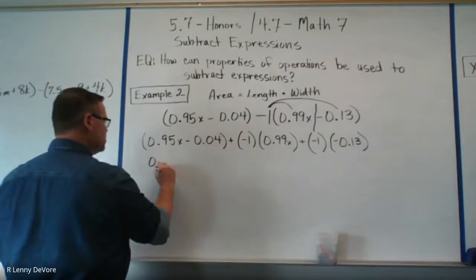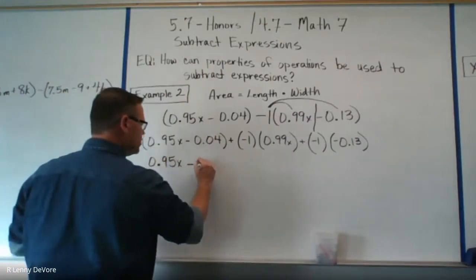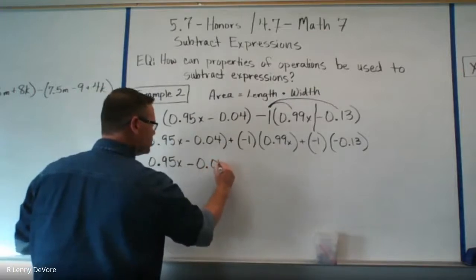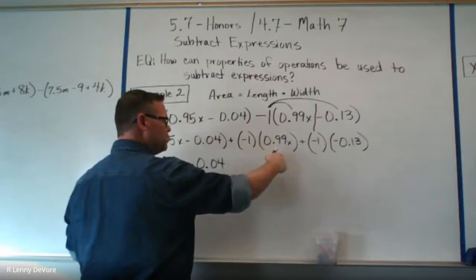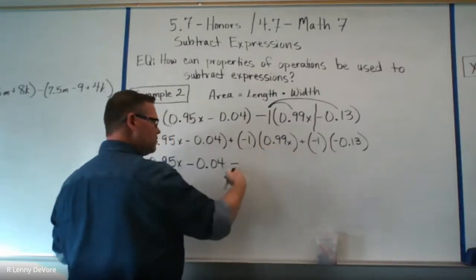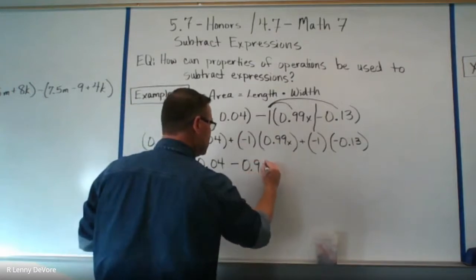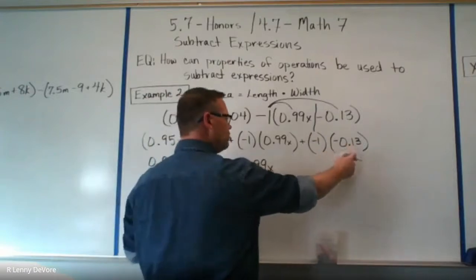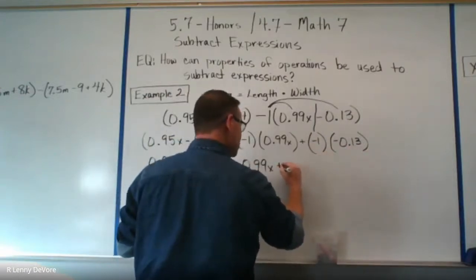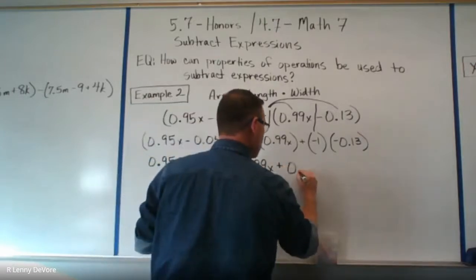So that becomes negative 1 multiplied by 0.99x, plus negative 1 multiplied by negative 0.13. Virtually what we're doing is changing the signs. So taking these out of the parentheses: 0.95x, then minus 0.04. Multiplying negative by positive gives negative, so minus 0.99x. Then negative times negative is positive, so plus 0.13.